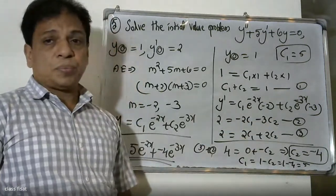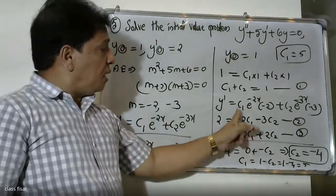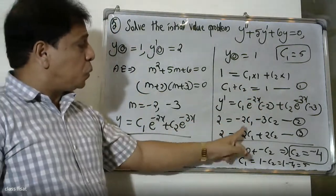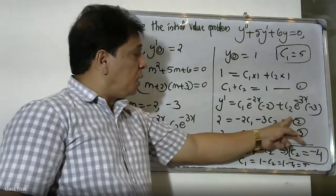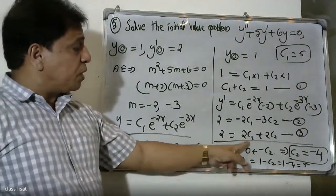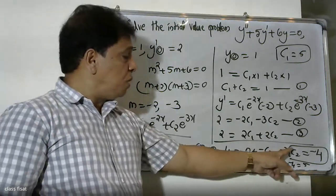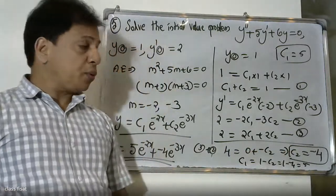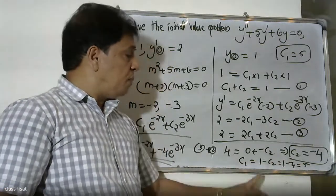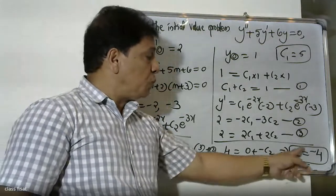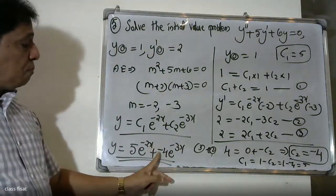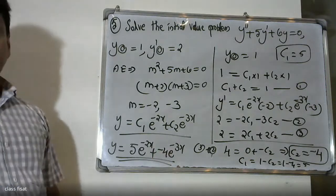From the system, minus two c1 minus three c2 equals zero and two c1 plus two c2 equals two. Adding these, c2 equals minus four. Then c1 equals one minus c2, that is one minus minus four equals five. Substituting c1 equals five and c2 equals minus four, the final answer is y equals five into e raised to minus two x plus minus four into e raised to minus three x.